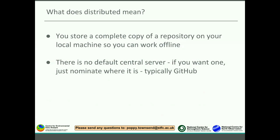So what do we mean by distributed? The key thing here is that every copy of a git repository — be it on Richard's machine, Poppy's machine, my machine, or up on GitHub — every single copy is a complete copy of the repository, including all the history and all the different commit points over time.